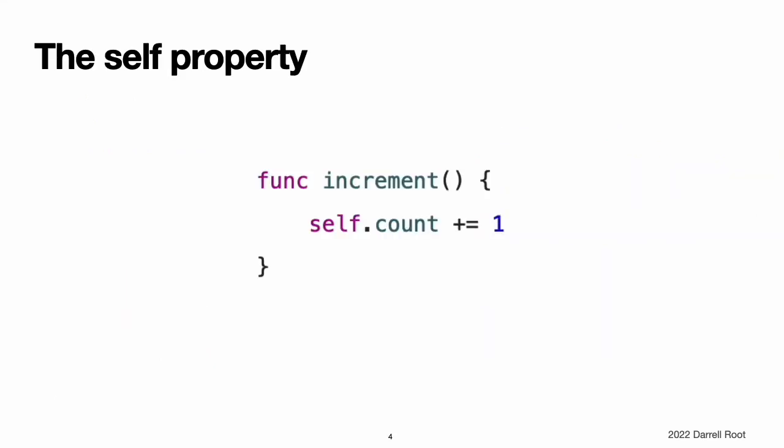Every instance of a type has an implicit property called self, which is exactly equivalent to the instance itself. You use the self property to refer to the current instance within its own instance methods. In practice, you do not need to write self in your code very often. If you do not explicitly write self, Swift assumes that you are referring to a property or method of the current instance whenever you use a known property or method name within a method. This assumption is demonstrated by the use of count rather than self.count inside the three instance methods for a counter.